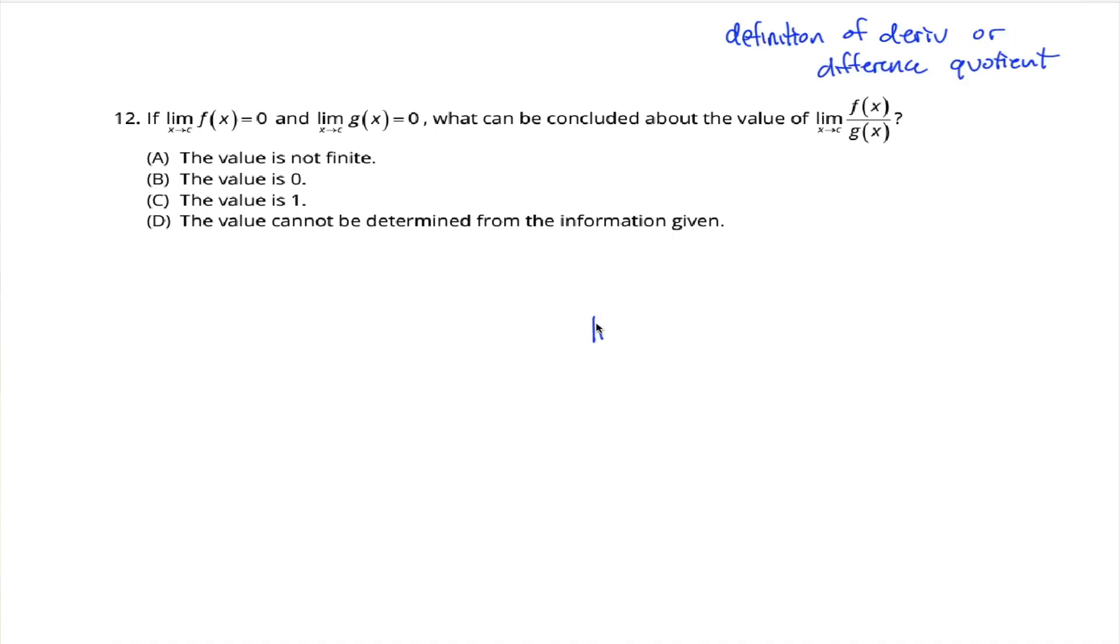So the classic example is something like the limit as x approaches 3 of x squared minus 9 divided by x minus 3. So in the context of this problem, the c is the 3, f of x is x squared minus 9, and g of x is x minus 3.